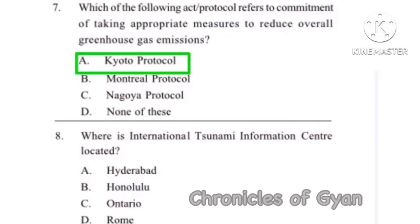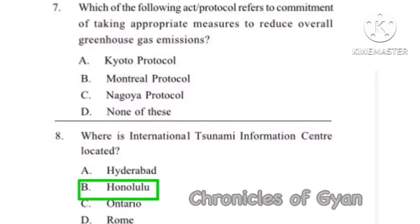Question 8: Where is the International Tsunami Information Center located? The correct answer is Option B, Honolulu.